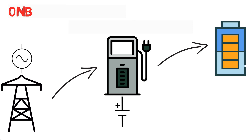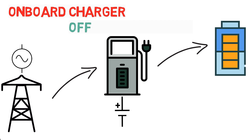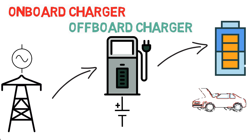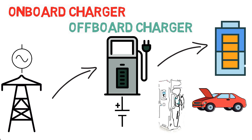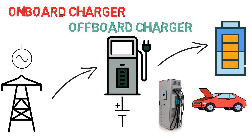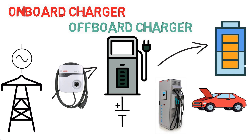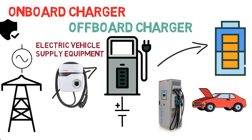These chargers are of two types: the on-board charger and the off-board charger. As the name suggests, on-board chargers are part of the electric vehicle system — they are present inside the vehicle itself. Off-board chargers, on the other hand, are outside the vehicle. Before the charger, a device known as EVSE — Electric Vehicle Supply Equipment — is present, which provides a reliable approach for safe and smart connection between the vehicle and the grid.